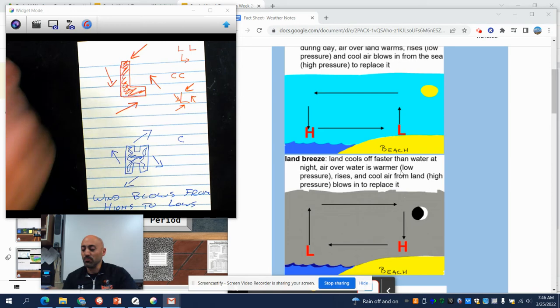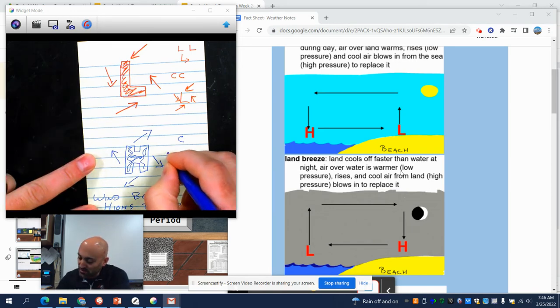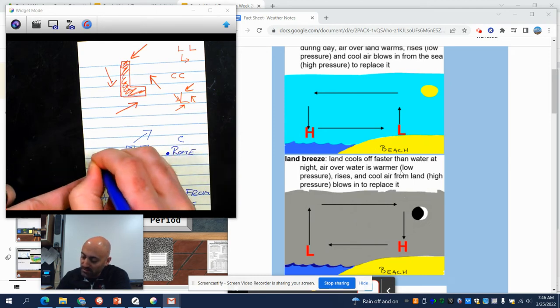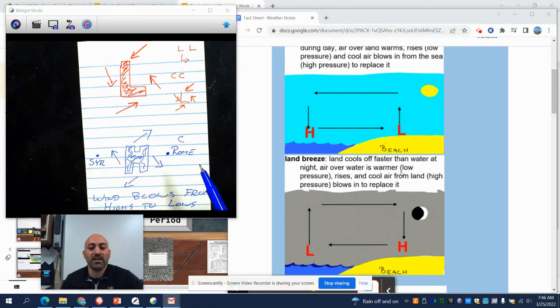Now the other thing you'll have to do is you'll have to pick if there's different cities. Say this is Rome and this is Syracuse. The wind is blowing different directions on one side or the other.